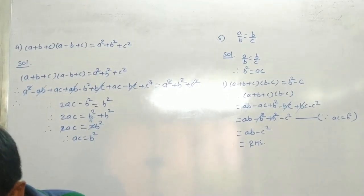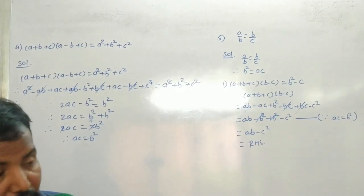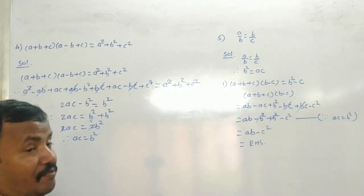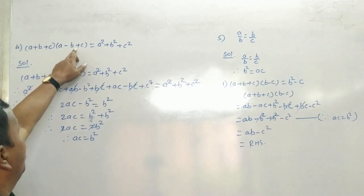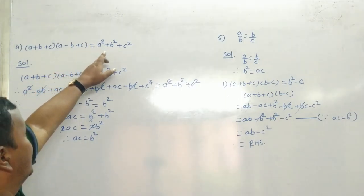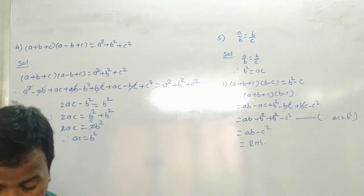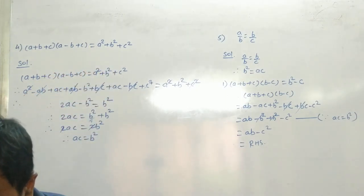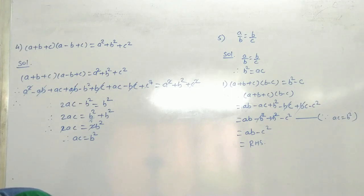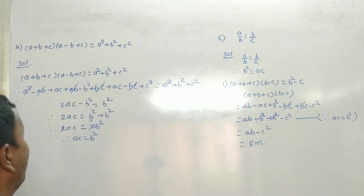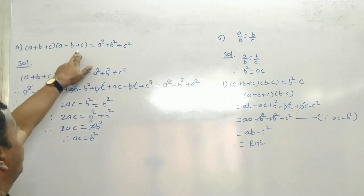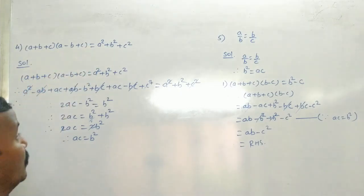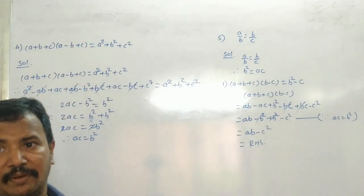Question number 4 में देखो - क्या बताया है? If A plus B plus C into A minus B plus C is equal to A square plus B square plus C square, then show that A, B, C are in continued proportion.